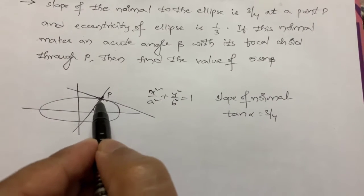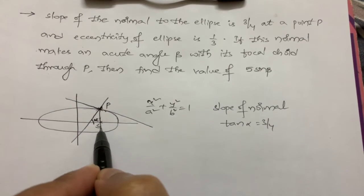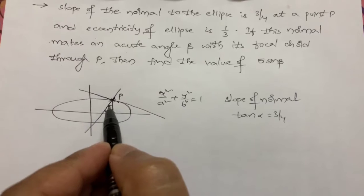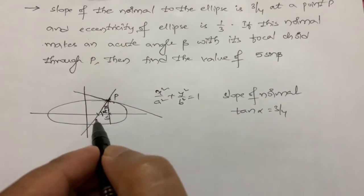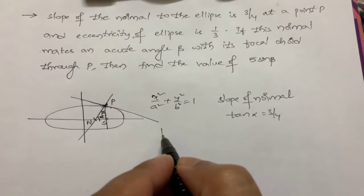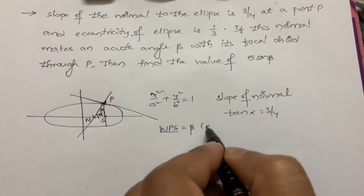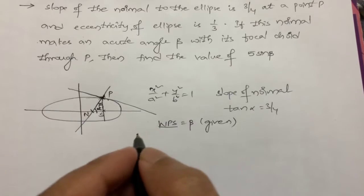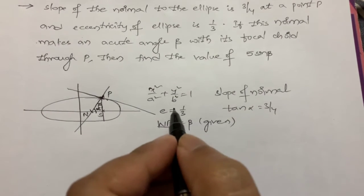There is a focus, and with the focal chord, the normal is making an angle β. So angle NPS is equal to β — this is given. The eccentricity of the ellipse is also given: e = 1/3.